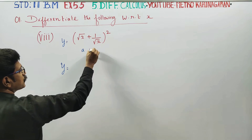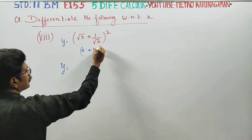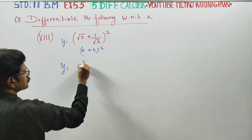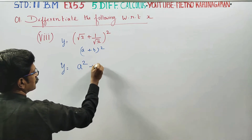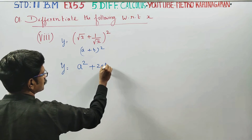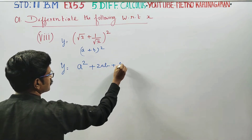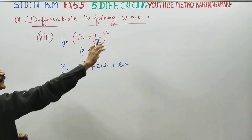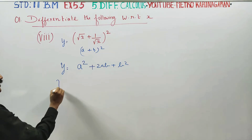It is the a plus b whole square formula. Using the a plus b whole square formula — a squared plus 2ab plus b squared — we use this technique to simplify, and then we start.